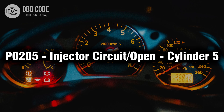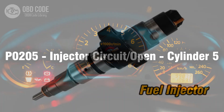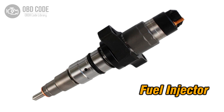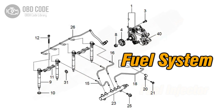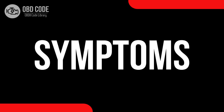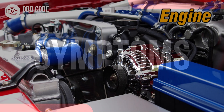Welcome. In this video we will talk about code P0205, its symptoms, causes and possible solutions. The P0205 trouble code indicates an open electrical circuit in the fuel injector for cylinder 5. This code typically points to issues related to the fuel injector circuit for the fifth cylinder, leading to an open circuit and potential fuel delivery problems.